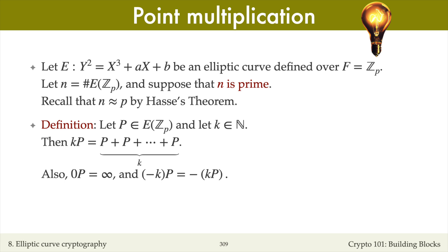Then by k times P, I mean the point P added to itself k times. I'll also define 0P to be the point at infinity, and minus kP, so a negative integer times P, to be the negative of the point kP. This operation of computing kP is called point multiplication.